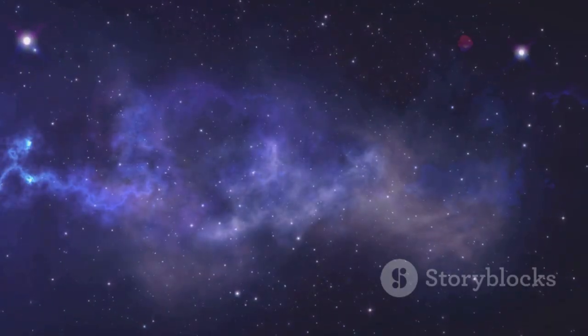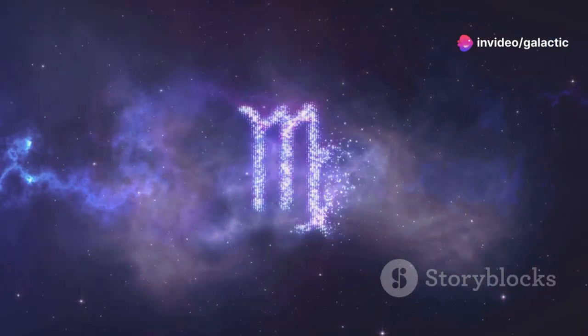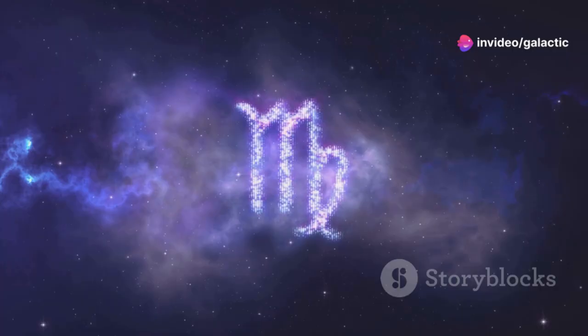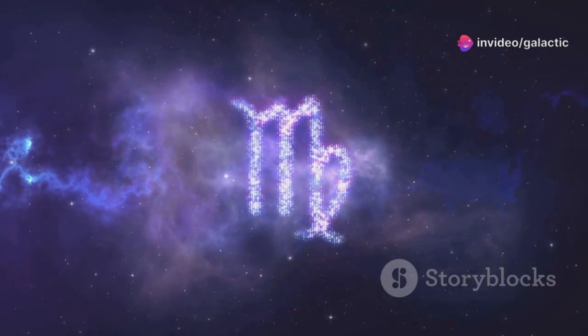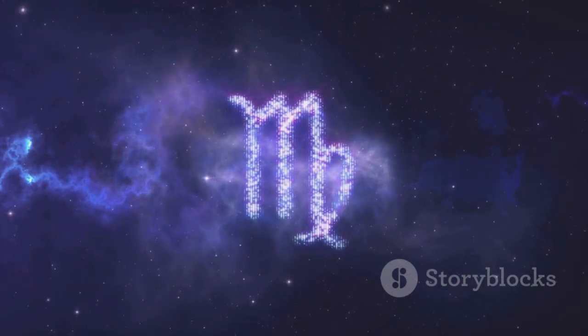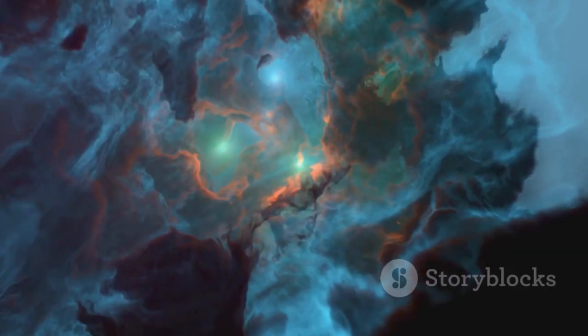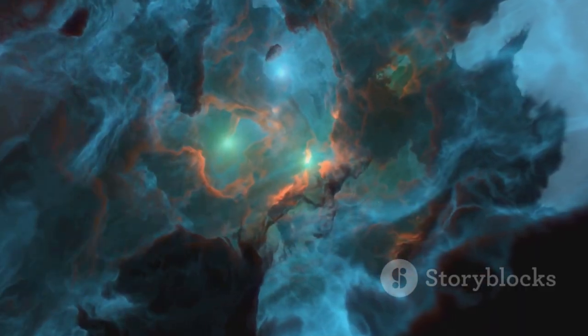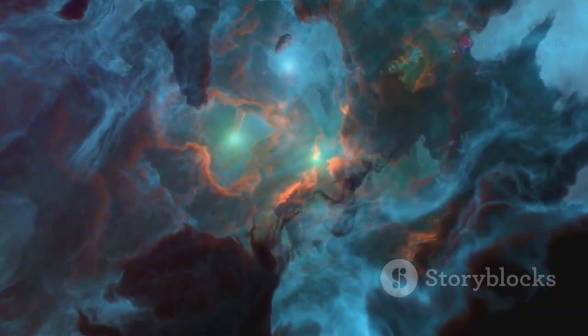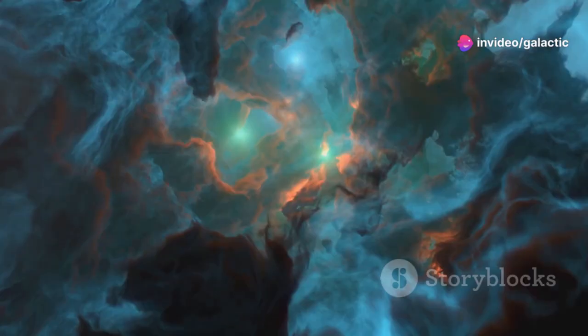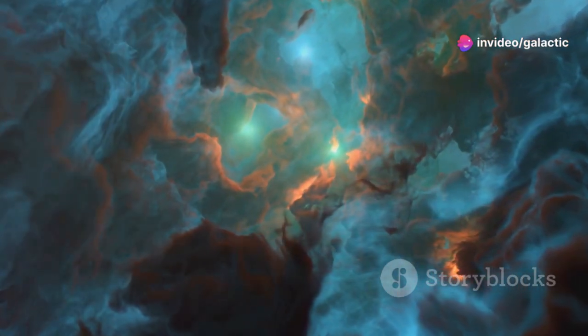After the Big Bang, gravity began its patient work, pulling together tiny clumps of matter. These clumps formed the first stars, which then gathered into small, chaotic proto-galaxies. Over eons, these proto-galaxies collided and merged, eventually giving rise to the massive, majestic galaxies we see today, like our own Milky Way.